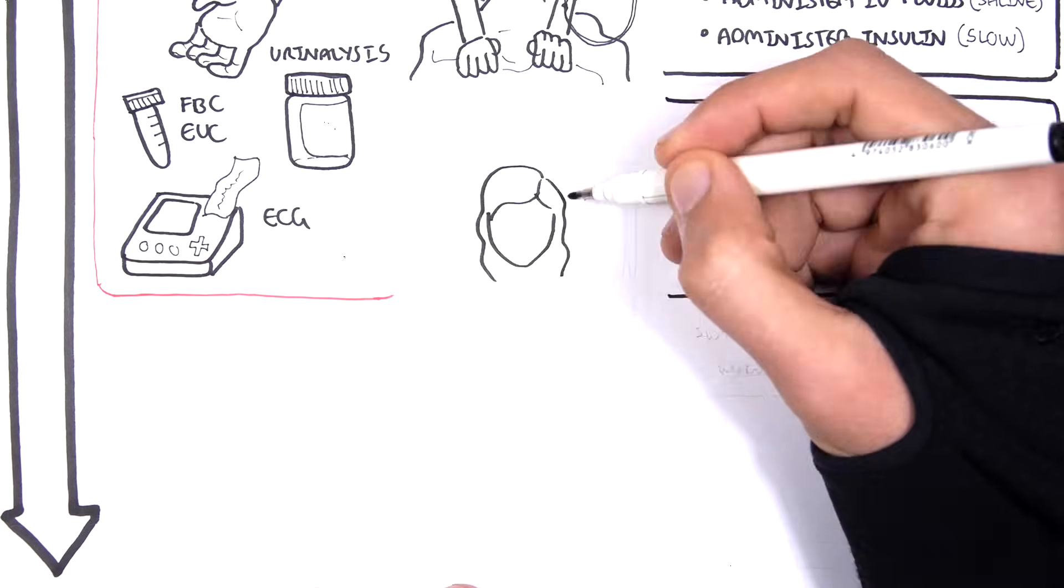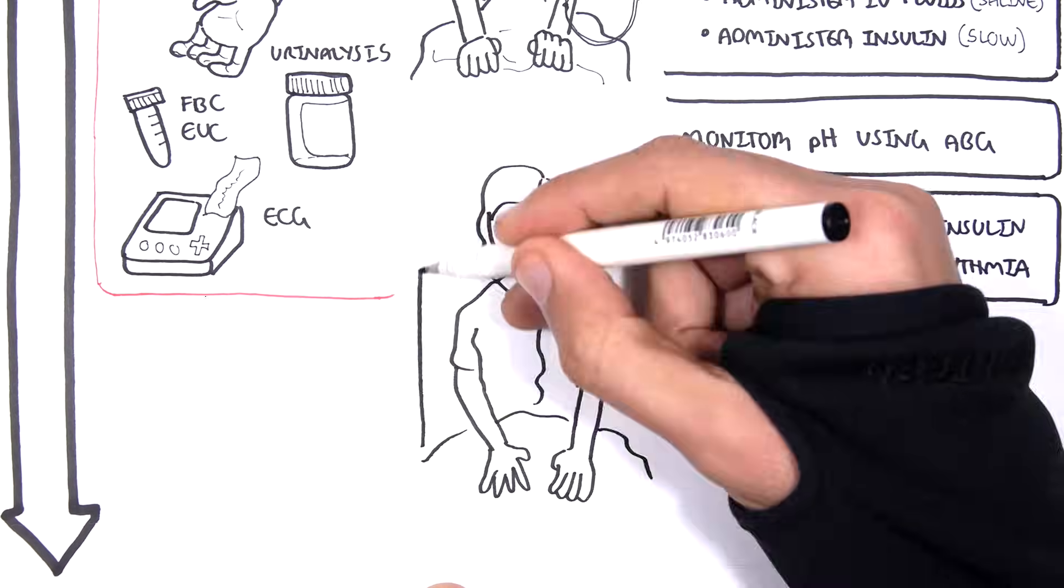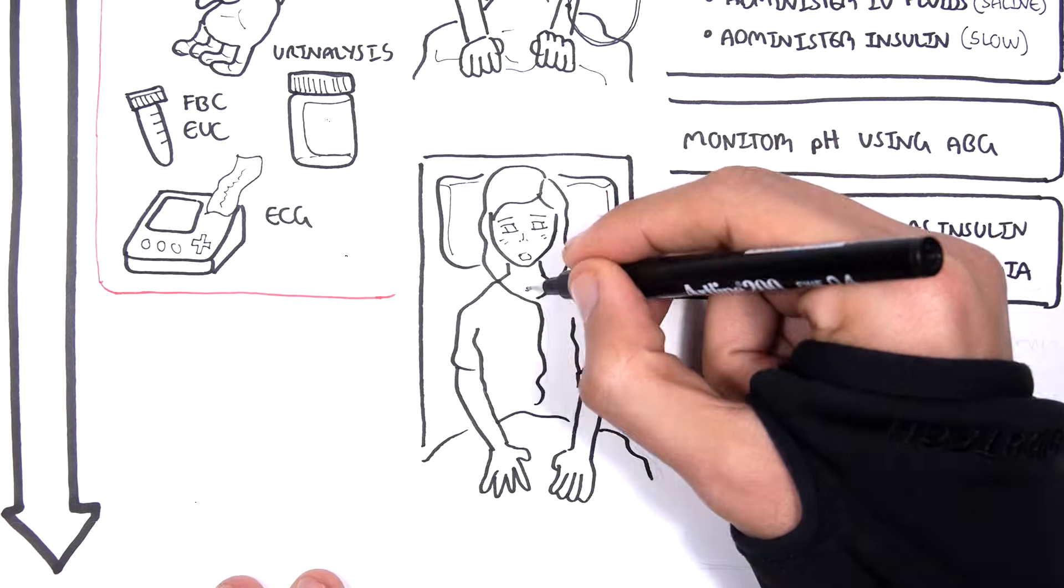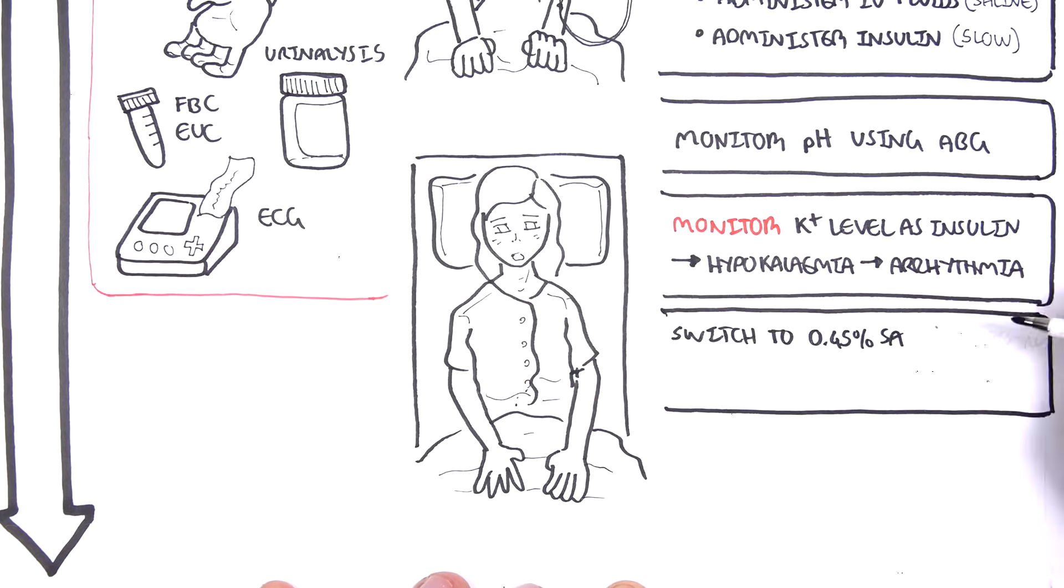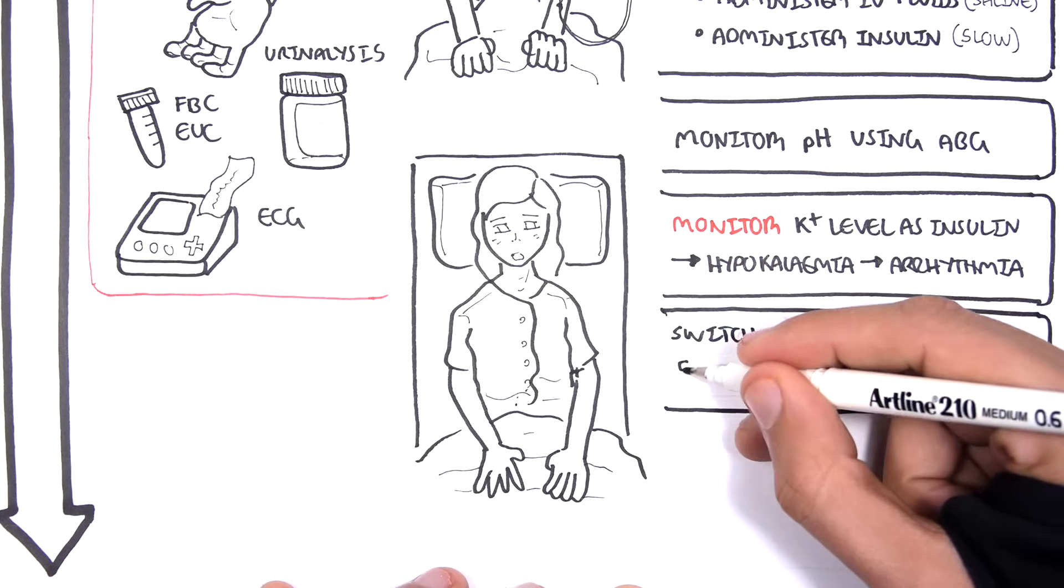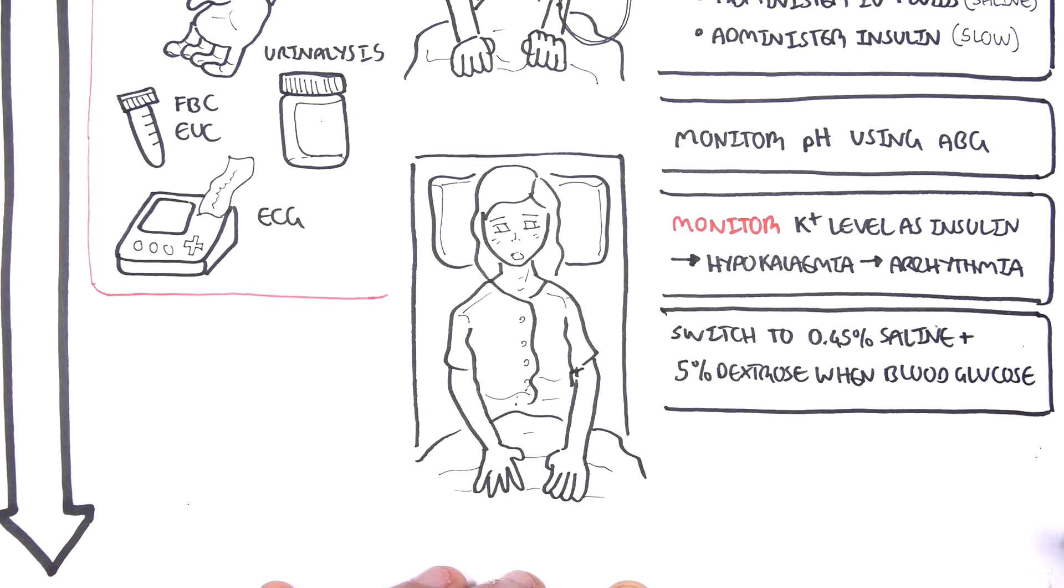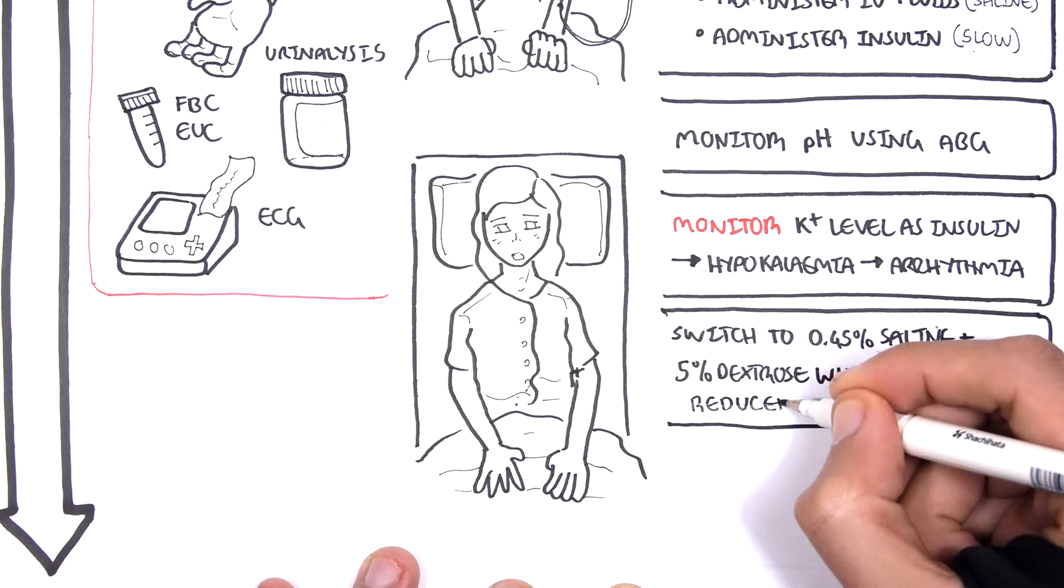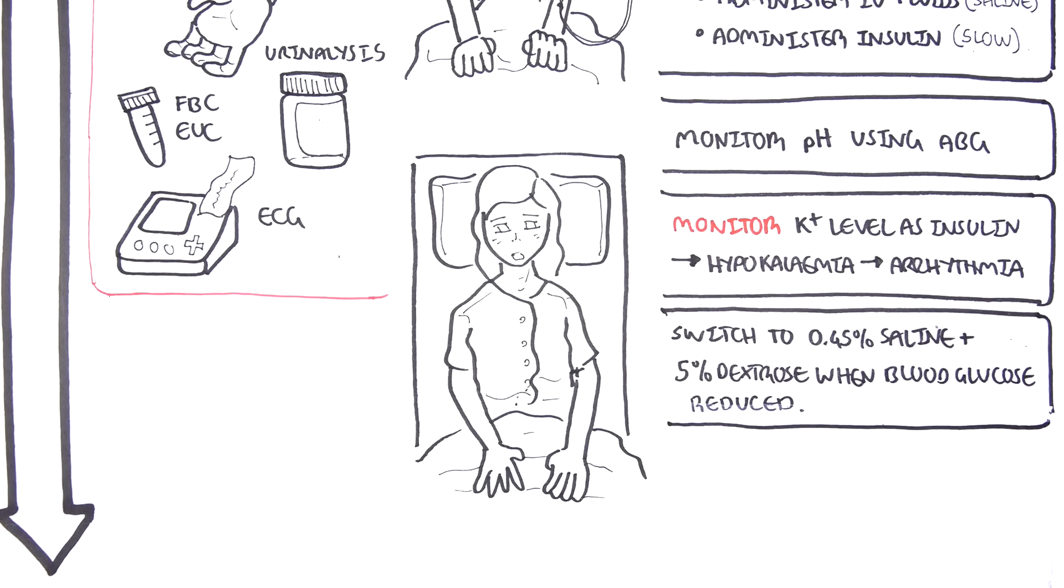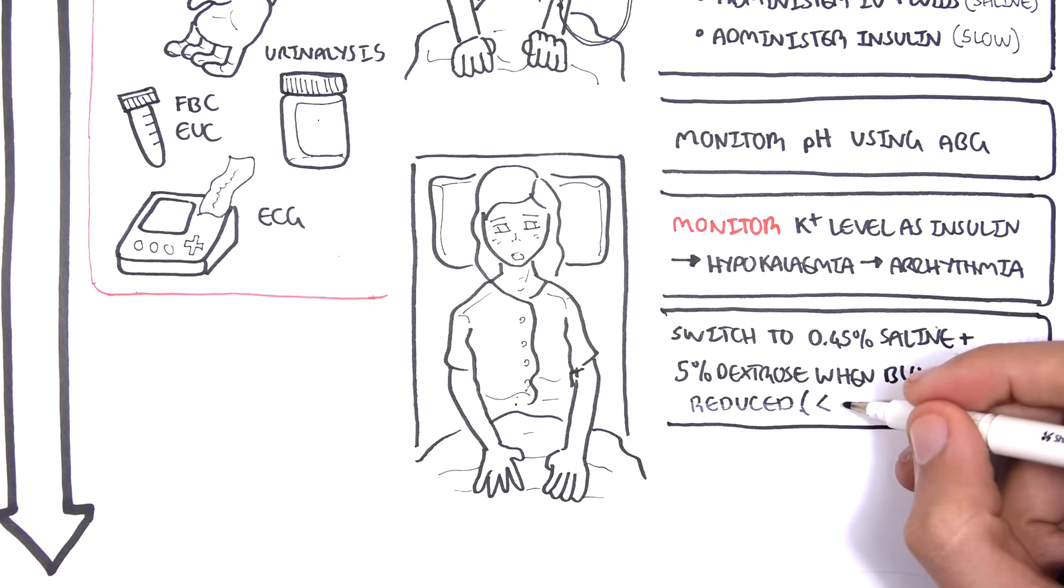Anyways, monitoring is continuous. Check pH and check bloods. After a while, you can switch the fluids to 0.5% saline and 5% dextrose. This is done when blood glucose goes down at least about 14 millimoles per liter.